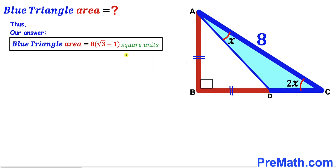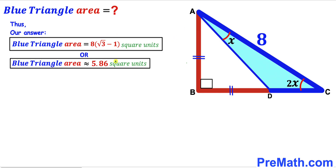After all calculations, the area of the blue shaded triangle is 8 times (√3 minus 1) square units, which is approximately equal to 5.86 square units. That's our final answer. Thanks for watching and please subscribe for more videos.